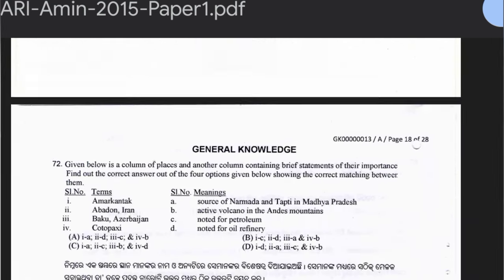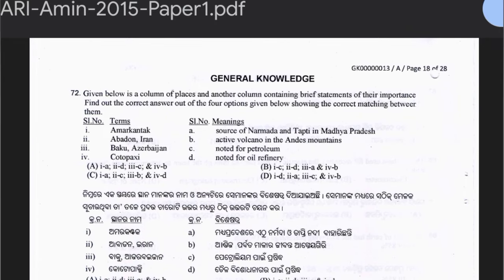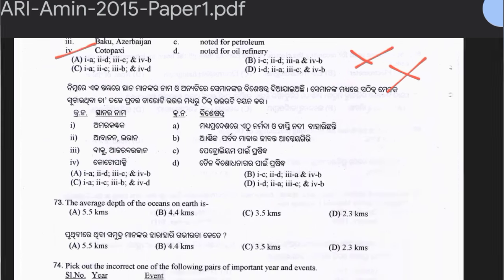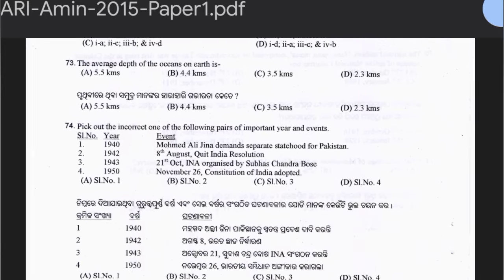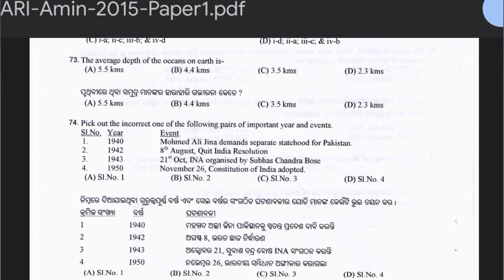Question 72 is a terms-and-meanings matching exercise. Amarkantak — source of Narmada and Tapti in Madhya Pradesh; Abadan — Iran — noted for oil refinery; Baku — Azerbaijan — noted for petroleum; Kotopaxi — active volcano in the Andes Mountains. Option A is the correct answer. Question 73: The average depth of the ocean and Earth is 5.5 km, 4.4 km, 3.5 km, or 2.3 km. The answer is option C — 3.5 km.